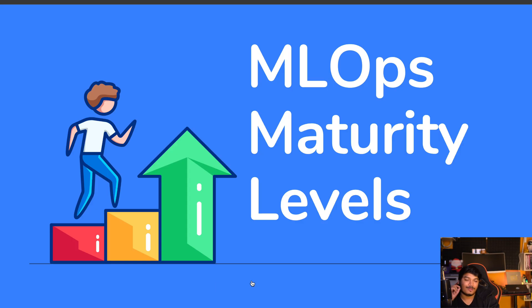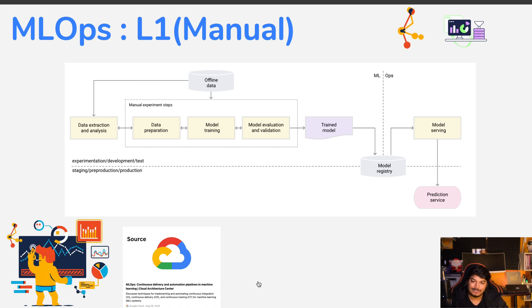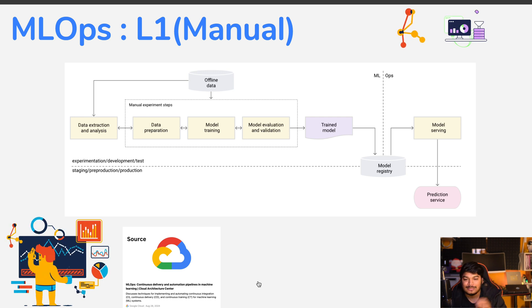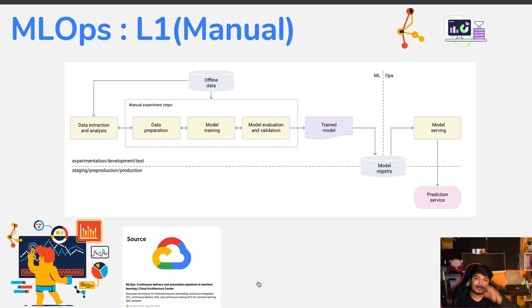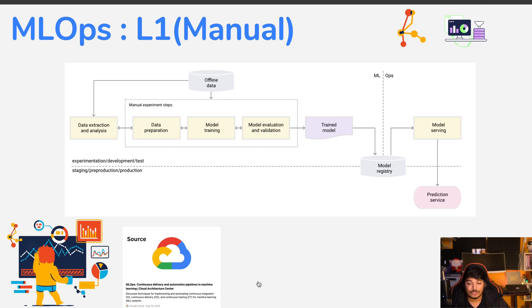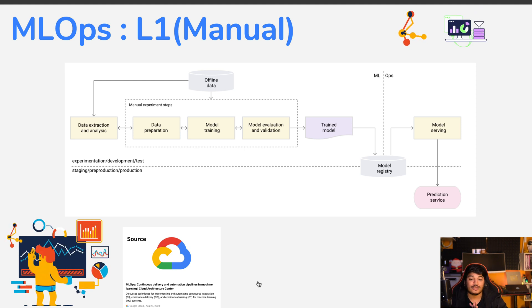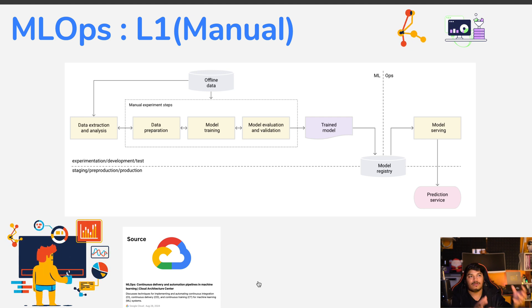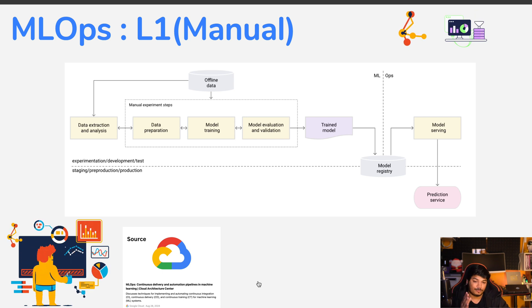MLOps maturity Level 1 is the manual level. Most things happen manually. On the ML side, you have offline data, you do data extraction and analysis, then go through manual experimental steps — data preparation, model training, evaluation, and validation. You save the trained model to a model registry, then it goes to a hosting or deployment stage that serves prediction requests.